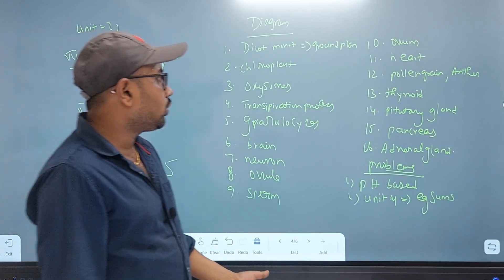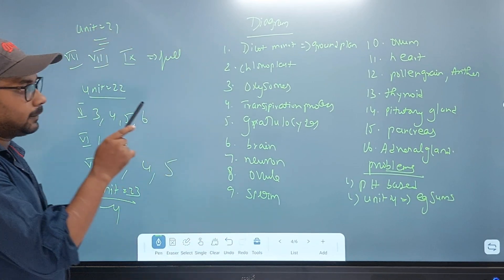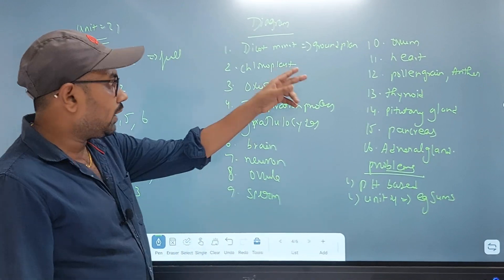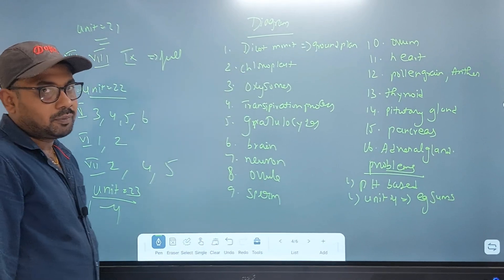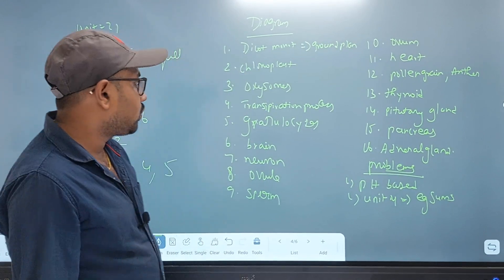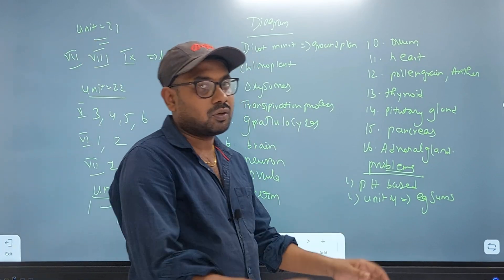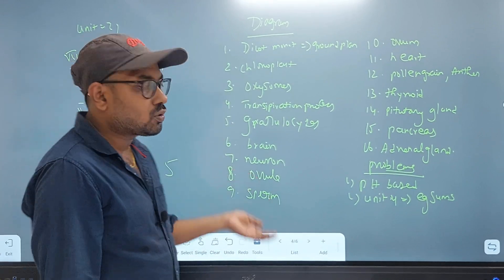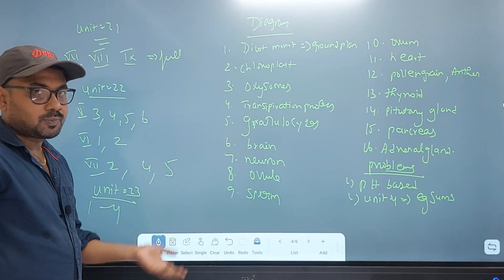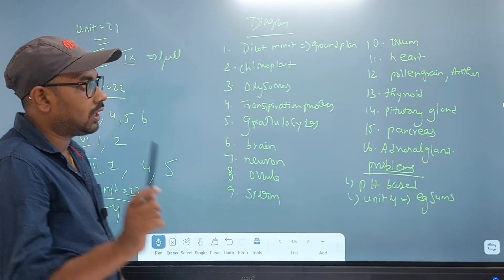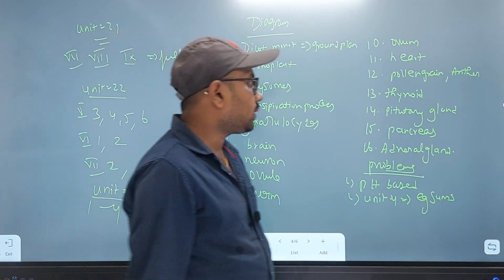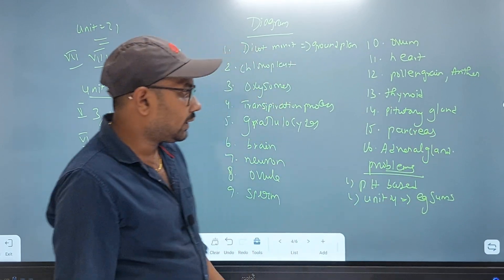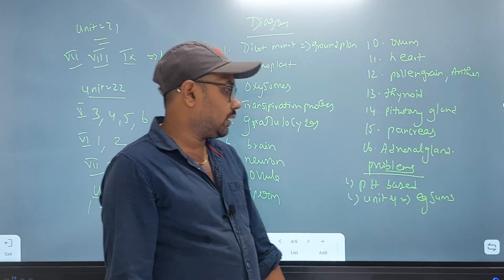Diagram. If you look at the diagram, it's a dicot — one or two, it's a stem root. It's a ground plant. Chloroplast, it's a path to mark a path. Oxizome, transpiration process — it's a path to get a path. Granulocytes, blood, brain, neuron, ovule, sperm — it is called ovule and sperm and brain and neuron; we will mark four parts. One is heart and another is anther. Heart is easy — thyroid gland, pituitary gland, pancreas, and adrenal gland. Adrenal gland is a big part.